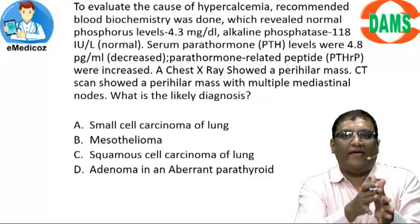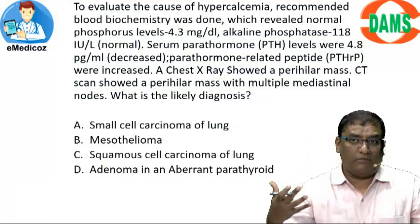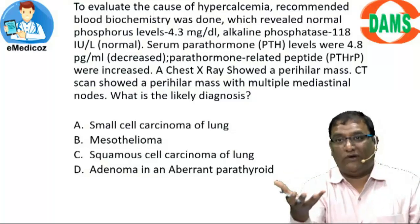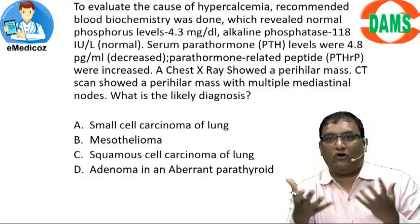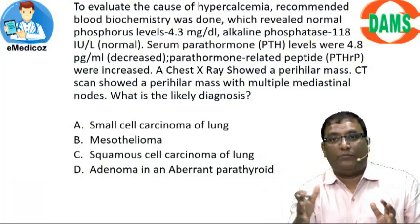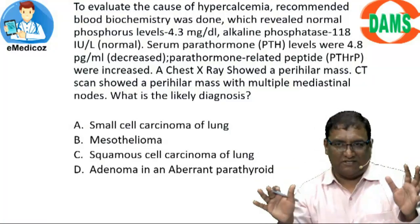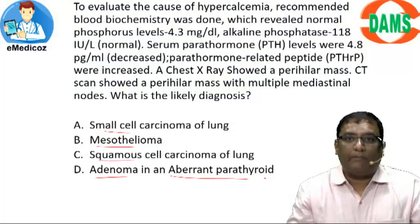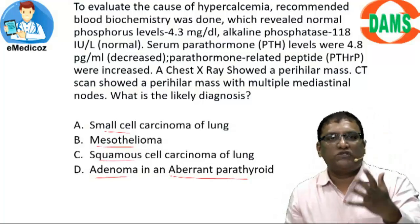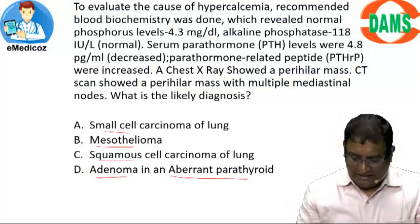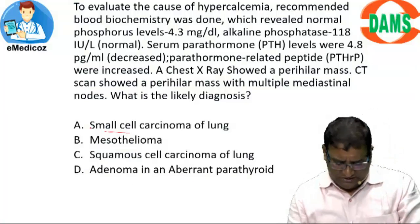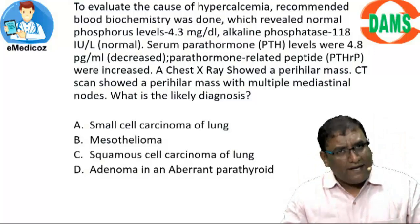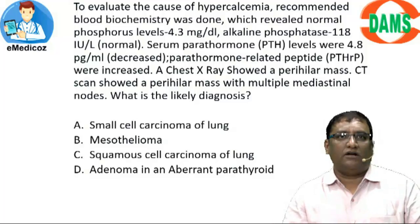My brain can then start focused thinking on where exactly the question is pointing. For example, if the options are from the renal system, my brain automatically starts filtering — pulse and BP are not very important here, respiratory rate probably not important — so I start looking at renal findings. Now looking at the options: small cell carcinoma of lung, mesothelioma, squamous cell carcinoma, and adenoma in an aberrant parathyroid. Three of the four options are malignancies of the lung or thorax, so my focus should be on the thorax and respiratory system.